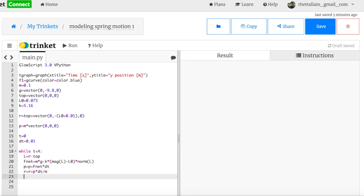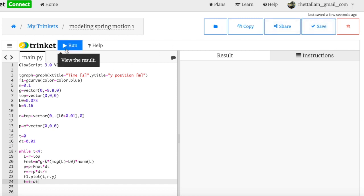And then I'll update the time. So I'll say F1 dot plot. And I want to plot T versus, I cannot do T versus R. I can do T versus the Y component of R. So I'm going to say Y dot R. I think that's good. And then I'll update time. T equals T plus dt. I'm going to save it. And let's see if this works.